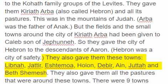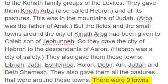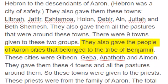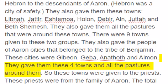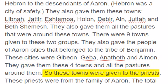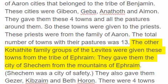Hebron was a city of safety. They also gave them Libna, Juttir, Eshtimo, Hallon, Debir, An, Jutta, and Bethshemesh, and all the pastures that were around these towns. There were nine towns given to these two groups. They also gave the people of Aaron cities that belonged to the tribe of Benjamin. These cities were Gibeon, Geba, Anadhoth and Almon. They gave them these four towns and all the pastures around them. So these towns were given to the priests from the family of Aaron. The total number of towns with their pastures was thirteen.